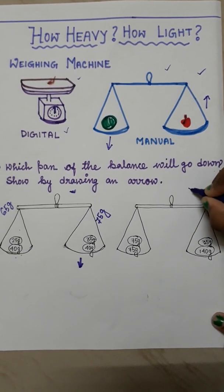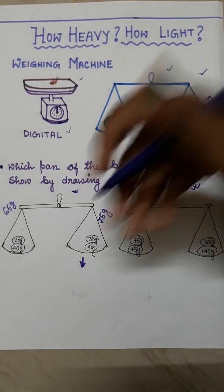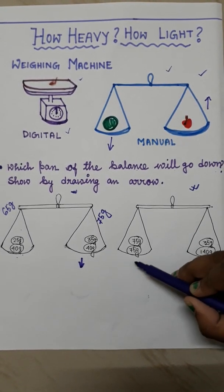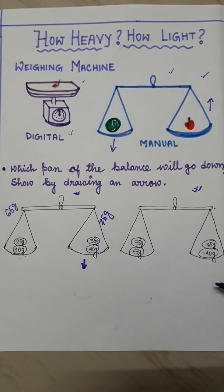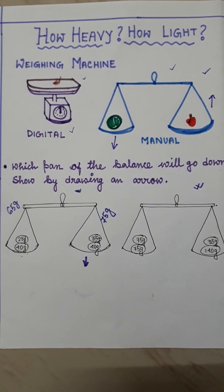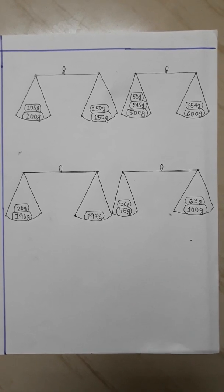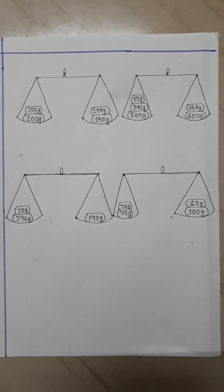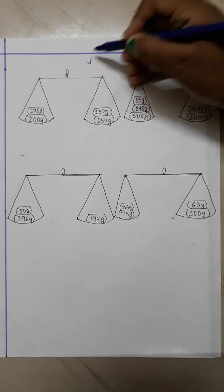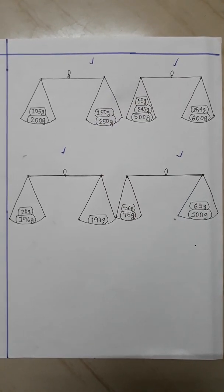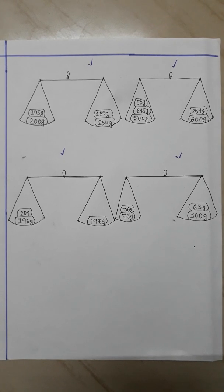Similarly, you have to do this for the other problems. You have to draw this and write the weights, then make an arrow. Here I have drawn a few more weighing machines. For these four also, you have to see which side is heavier and which side will go down.